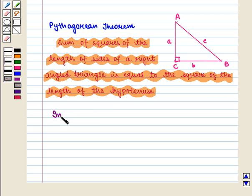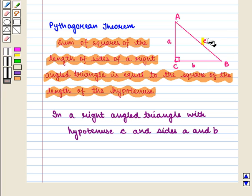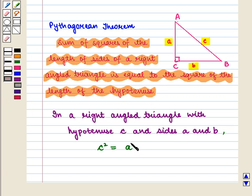That is, in a right-angled triangle with hypotenuse C and sides A and B, we have C square is equal to A square plus B square.